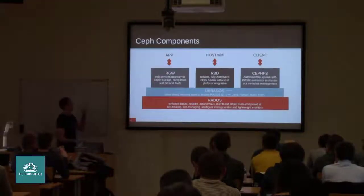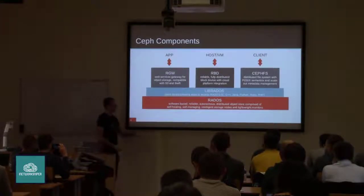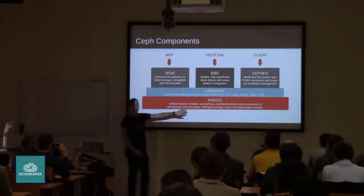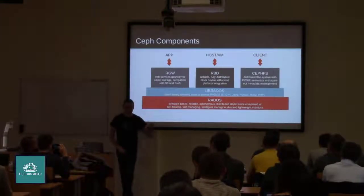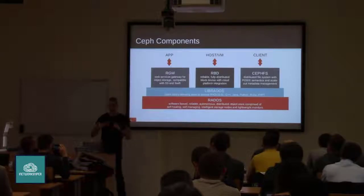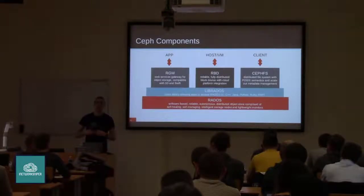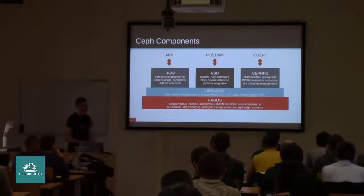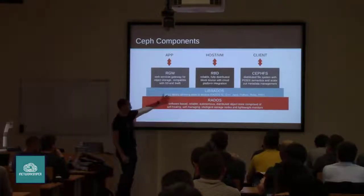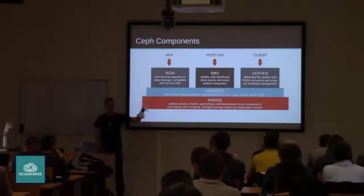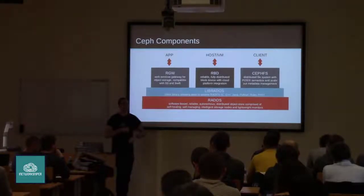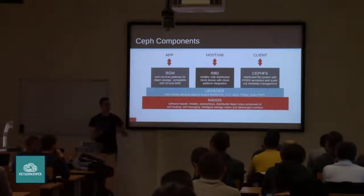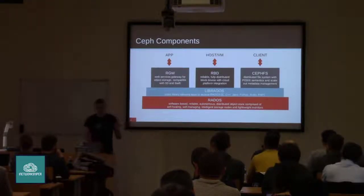Ceph has a number of main components. At the bottom layer we have the Reliable Autonomic Distributed Object Store — RADOS — which is the base layer in which Ceph stores all of its data. You talk to that RADOS cluster using a LibRADOS library, and we build all of our interfaces for more common storage systems — such as object, block device, or file system — on top of that.